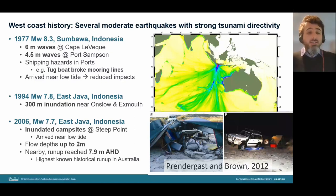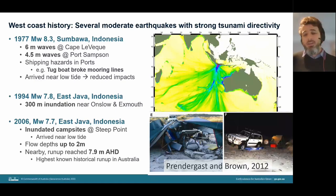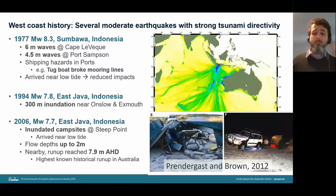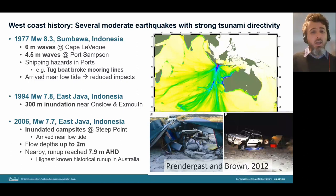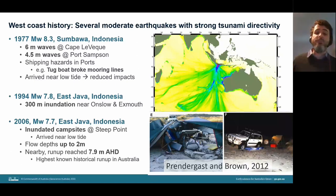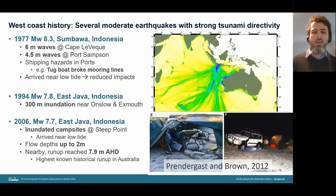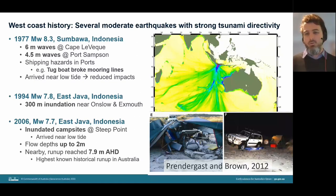The 2006 event arrived near low tide, but people reported flow depths up to about two meters, trashed campsites, and moved a vehicle about 10 meters. In a nearby area, the run-up reached 7.5 meters above mean sea level — the largest known historical run-up in Australia. This is impressive given that the earthquake magnitude wasn't that large; it was simply a tsunami with good directivity.